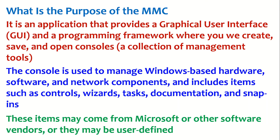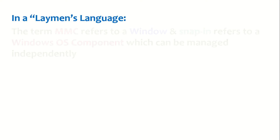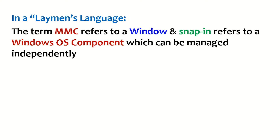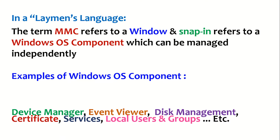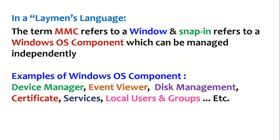These items can come from Microsoft, other software vendors, or they may even be user-defined. In layman's terms, Microsoft Management Console refers to a window, and a snap-in refers to a Windows operating system component which can be managed independently. For example: Device Manager, Event Viewer, Disk Management, Certificates, Services, and Local Users and Groups. These are some of the Windows components which can be managed independently, and we need to add these snap-ins into the Microsoft Management Console.